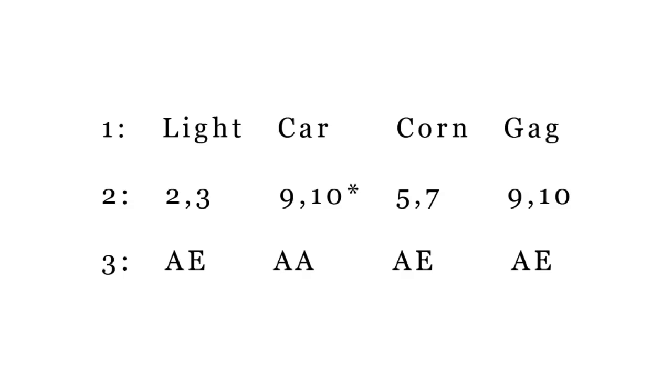Light car corn gag for the first line. 2, 3, 9, 10, 5, 7, 9, 10 on the second line. And A-E, A-A, A-E, A-E for the third line.